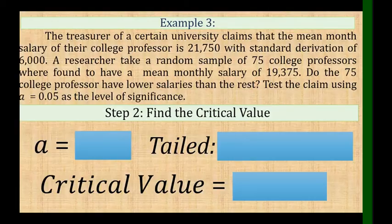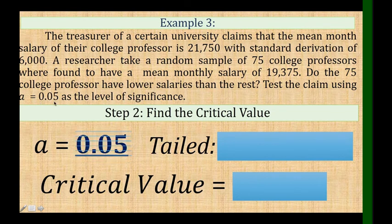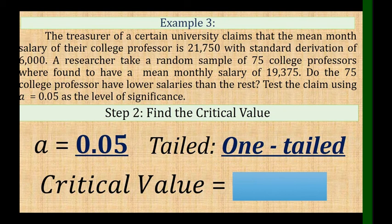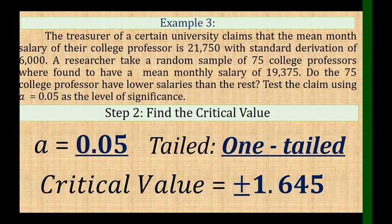For Step 2, the alpha is 0.05. Since the alternative hypothesis states 'lower mean,' it is directional, so the tail is one-tailed. Using the critical region table for the Z-test, the critical value for one-tailed at 0.05 is 1.645.